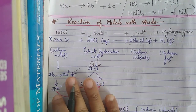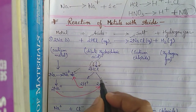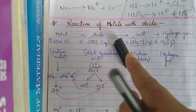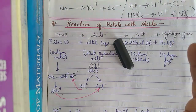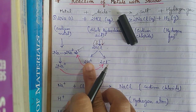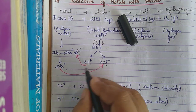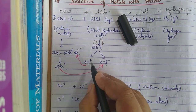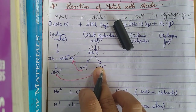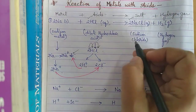Now imagine the situation in dilute acid: H⁺ and Cl⁻ ions are present. As sodium atoms are added, they release electrons to become Na⁺. Now the solution has two Na⁺, two H⁺, and two Cl⁻ ions. Since opposite charges attract, Na⁺ forms a bond with Cl⁻ — forming NaCl, our salt.